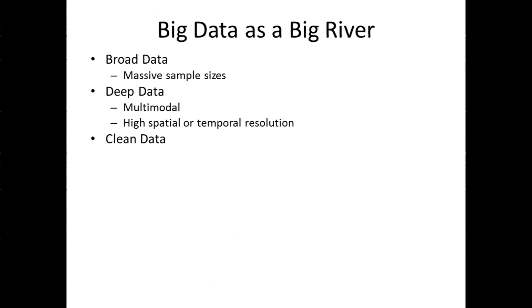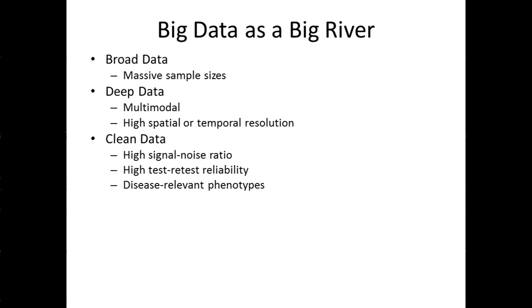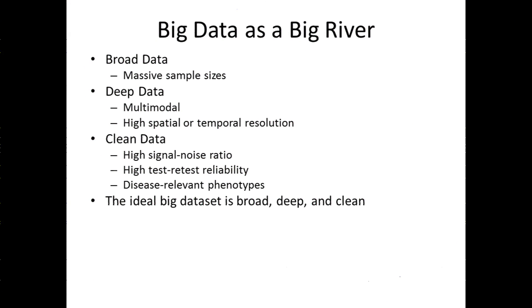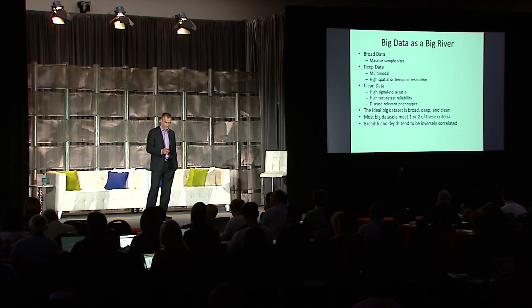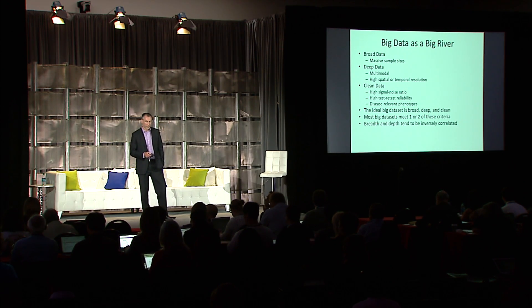And like a river, data can be clean or less clean. In terms of data purity with imaging, we think about imaging modalities with a high signal-to-noise ratio or high test-retest reliability. Particularly for disease-related imaging, we want imaging that provides really disease-relevant phenotypes — and this is a big caveat in a lot of studies. The ideal big data set would be broad and deep and clean, but most big data sets really meet only one or two of these criteria. Breadth and depth of data tend to be inversely correlated.